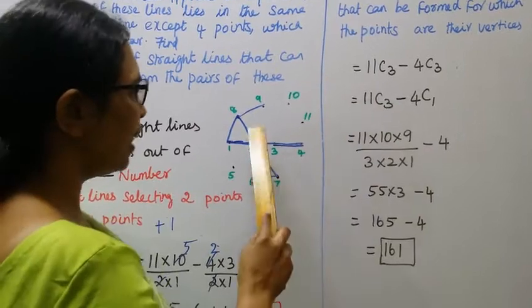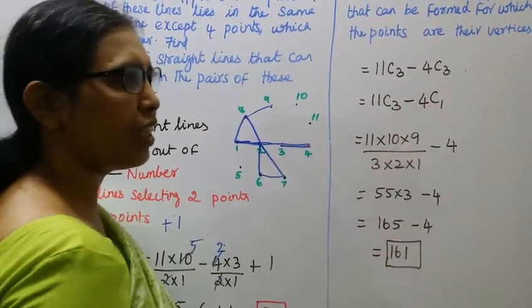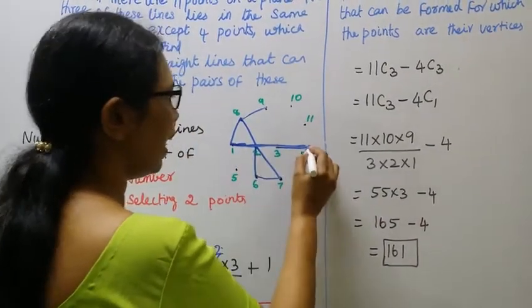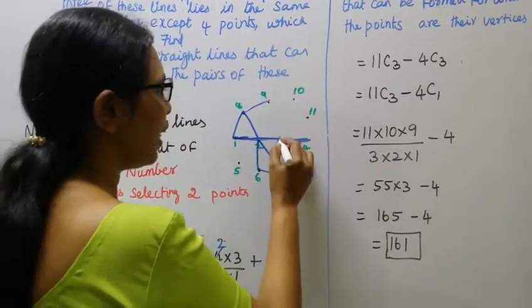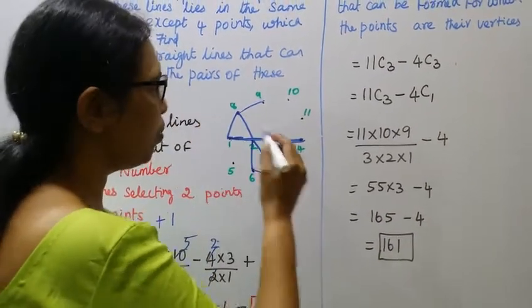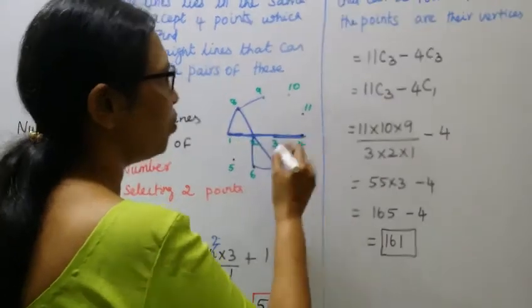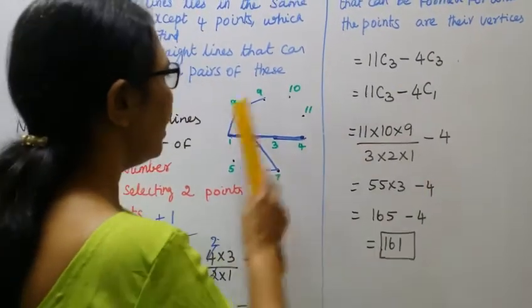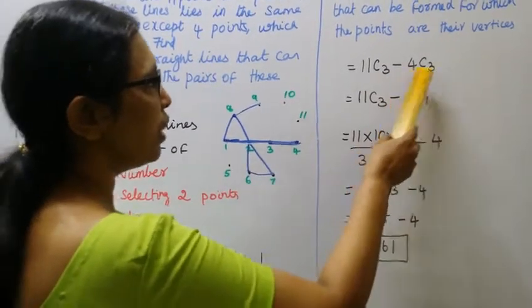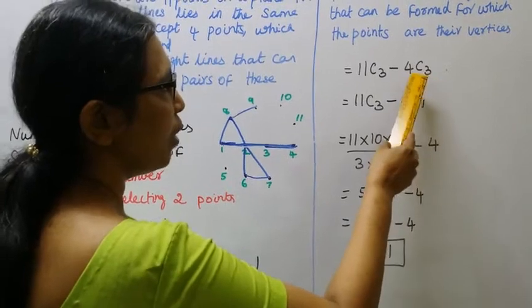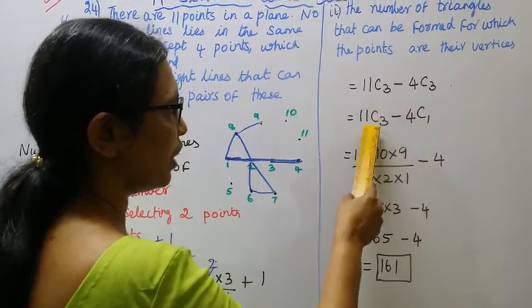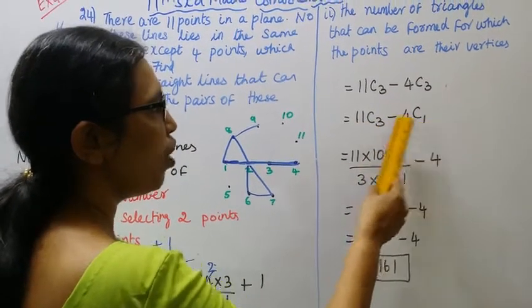It is 11C3 minus 4C3. 4C3 is 4 minus 3, which is 4C1. This is 11C3 minus 4C1.